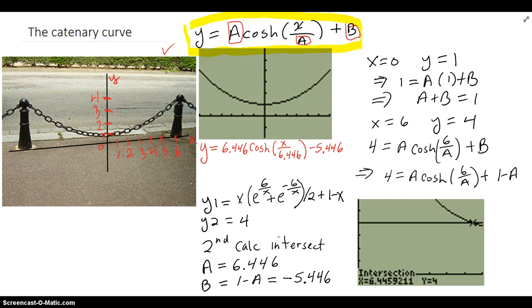So what I did over here on this hanging chain is I put a coordinate system, XY coordinate system. Here's your Y axis, here's your X axis, and I counted 1 as being where this chain seemed to cross the Y axis, right here.